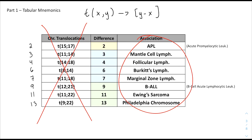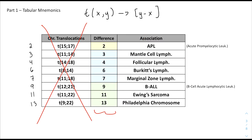With this method, the downside is that you won't be able to free-recall a translocation, but for multiple choice exams we're able to cut in half the total amount of numbers we need to know, and we don't have to deal with repeated 14s, 18s, etc. We just have a unique ID number for each pathology.